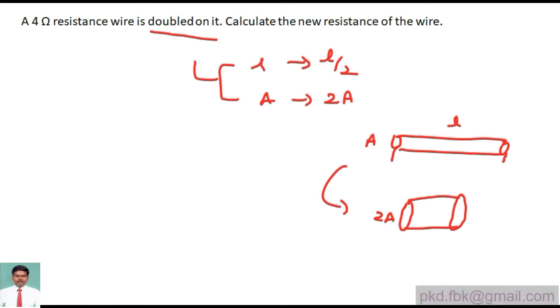After it is reshaped like this with 2A and the length of L by 2, what is the value of the new resistance? That is what they are asking. We are going to find it now. In order to find this, I'm going to use the formula.